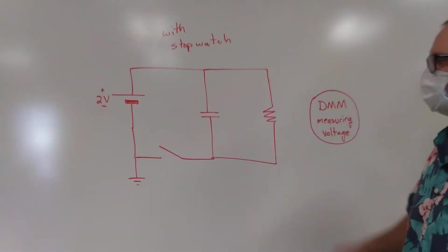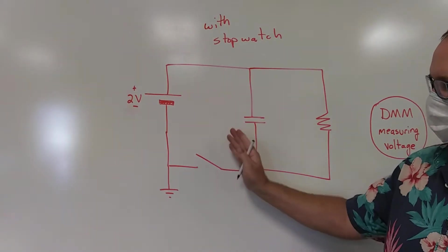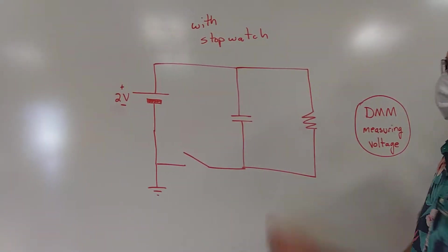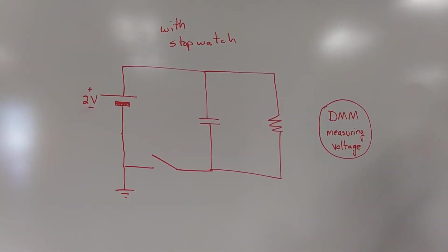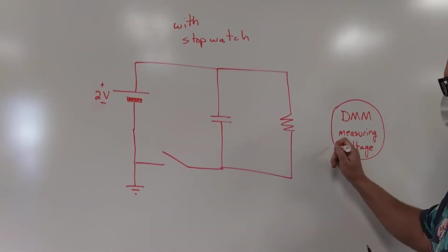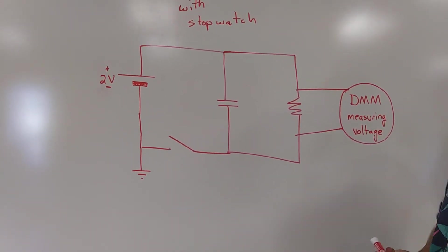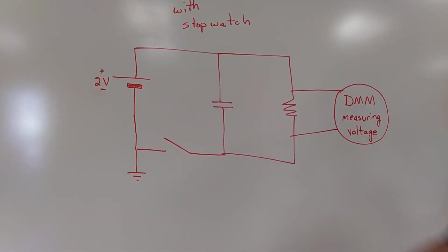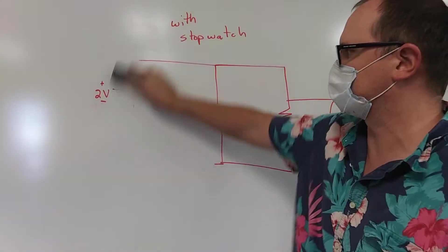When we first did this with the stopwatch we had a two volts power supply and we had a switch that would open and close and then we put the capacitor and the resistor in parallel. And then we had a DMM and we measured the voltage across the resistor.